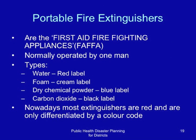Water-containing extinguishers often have a red label. Foam-containing extinguishers usually have a cream label. Dry chemical powder extinguishers usually have a blue label. Carbon dioxide extinguishers usually have a black label. Nowadays, most extinguishers are red in colour but are differentiated by a colour code placed on them to indicate their content.